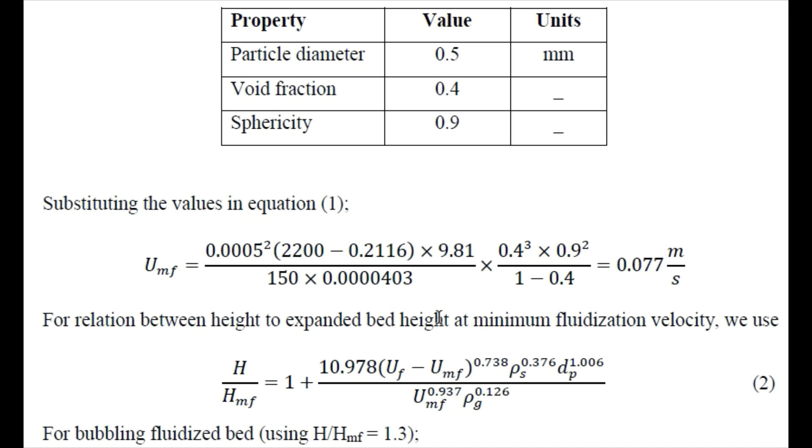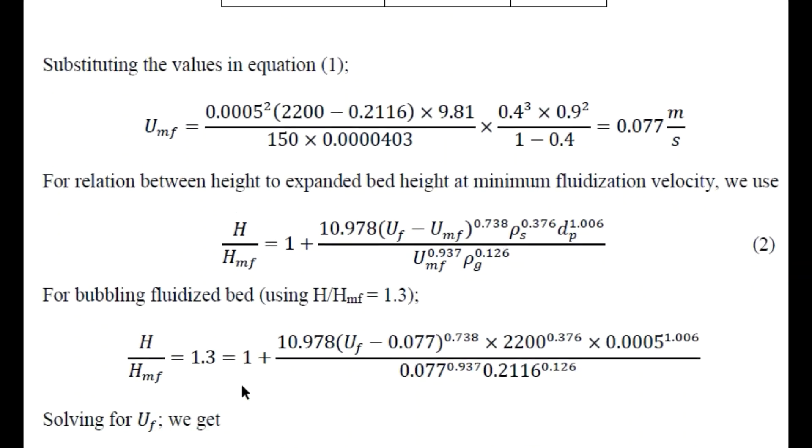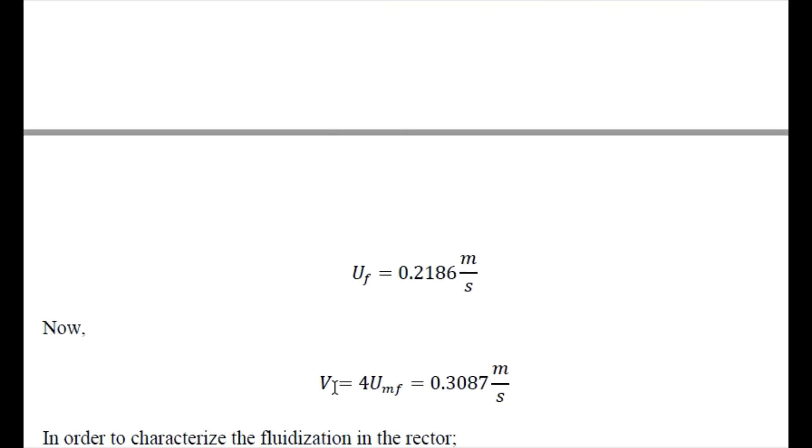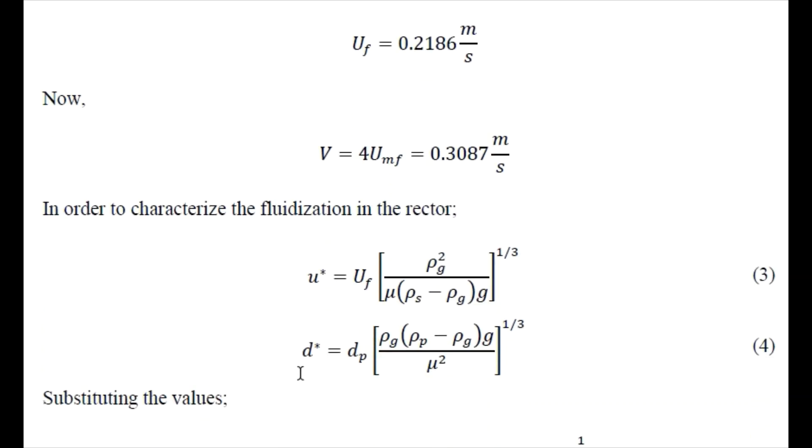Now we need to find the height or minimum fluidization height using this equation, equation number two. Here we have actual fluidization velocity, minimum fluidization velocity, density of the solid, density of gas, and particle diameter. We can take this ratio as 1.3, and after that we can find the fluidization velocity required and the expanded height. We can do it either using the Excel solver function or we can just rearrange it to get the value of uf. After solving we obtain the value as uf equals 0.2186. Now we can take the velocity as four times the minimum fluidization velocity, which comes out to be 0.3087, which is slightly higher than the fluidization velocity.